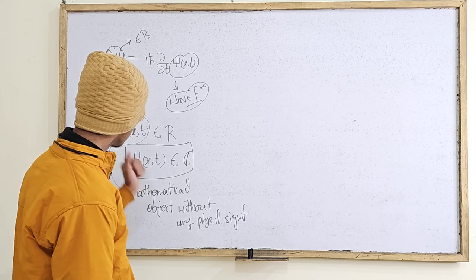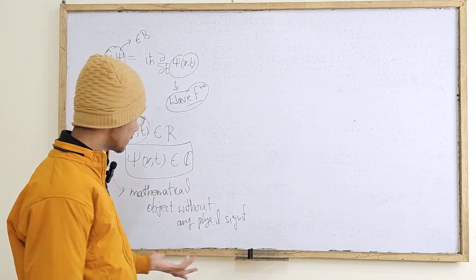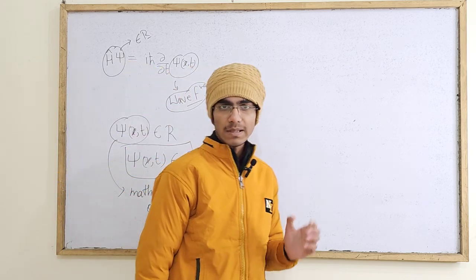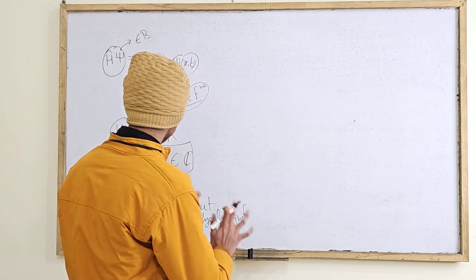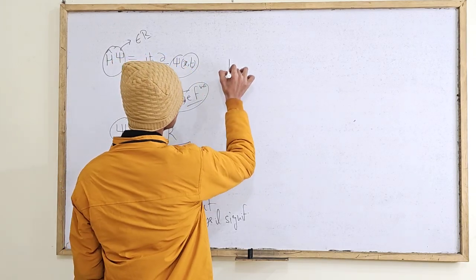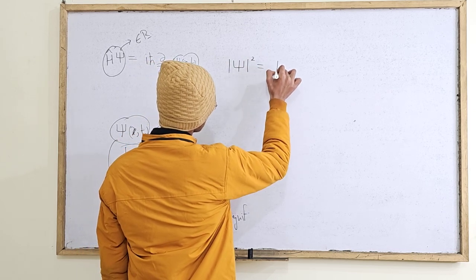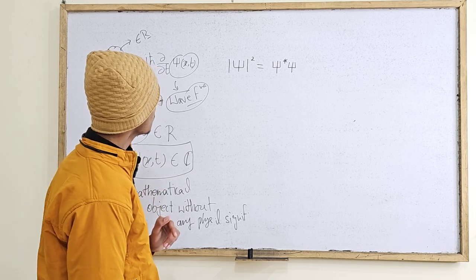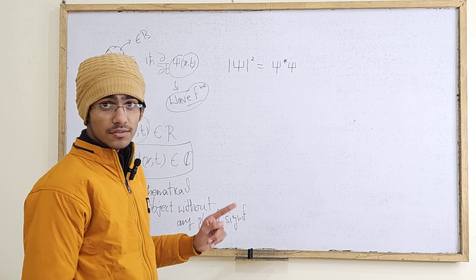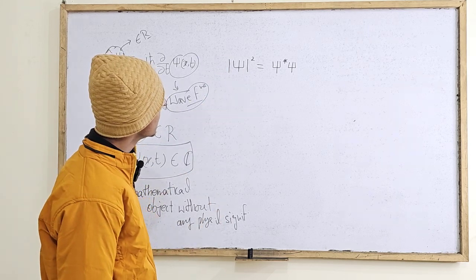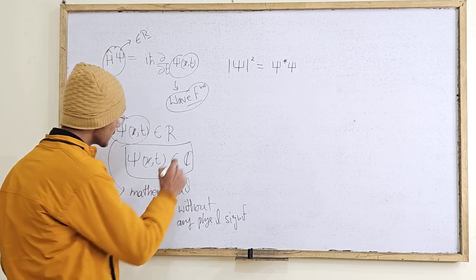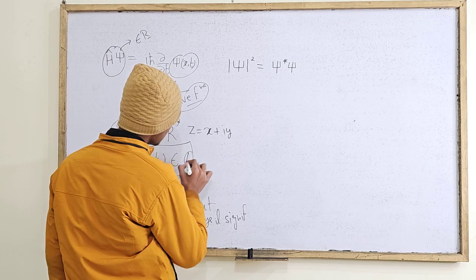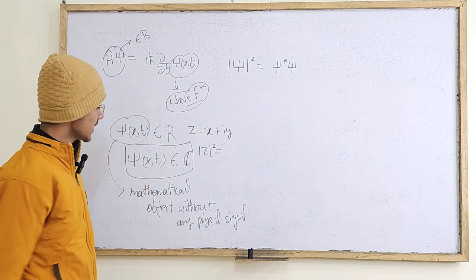Now, many take the modulus of the wave function, which we can certainly do since it is a complex number. We know that the square of the modulus of a complex number is that complex number times its complex conjugate. So the square of the modulus of the wave function is ψ* times ψ — the conjugate of ψ times ψ itself. And I say that this does have a physical significance.